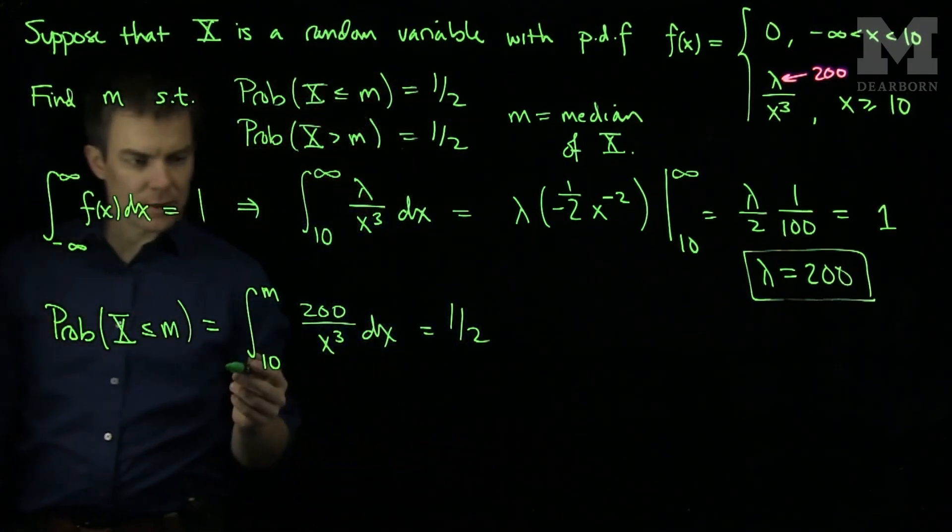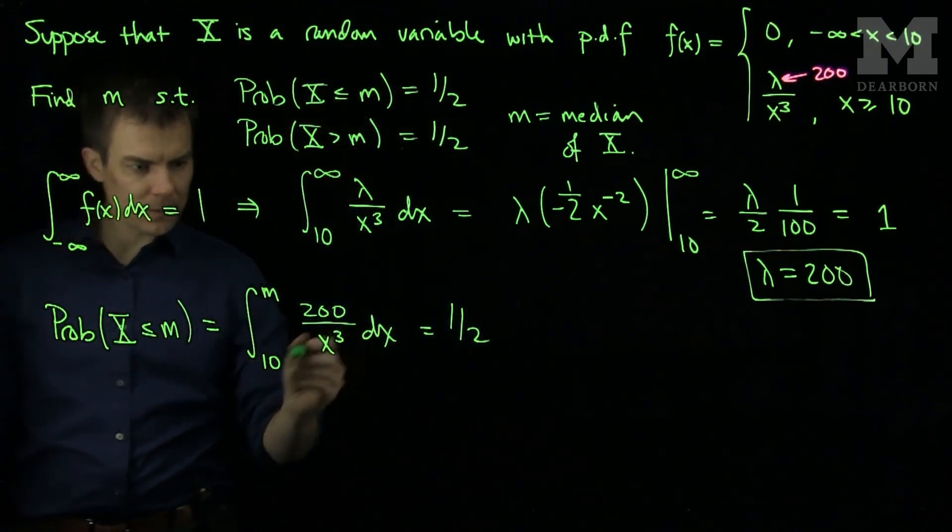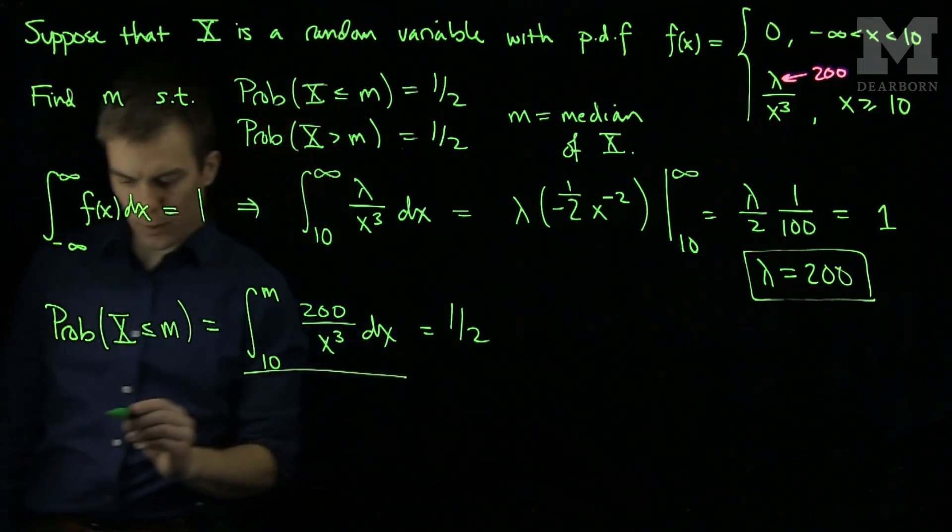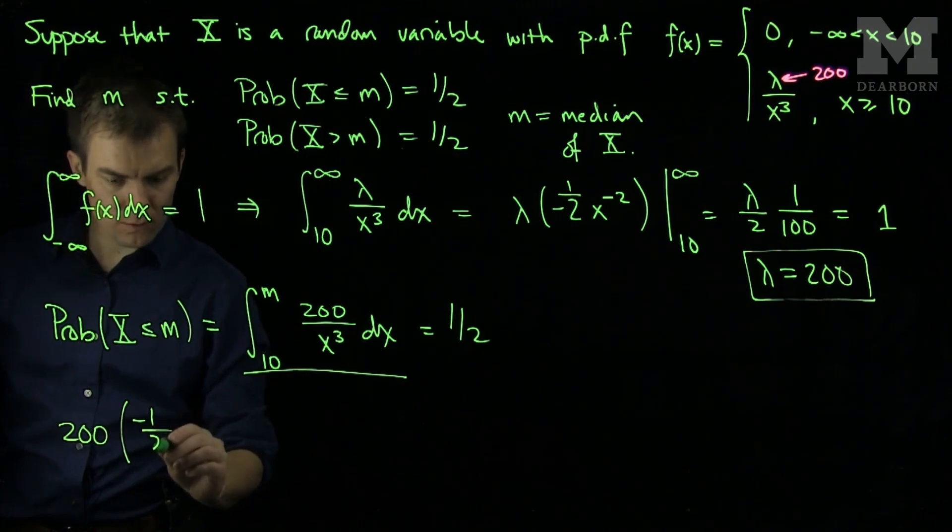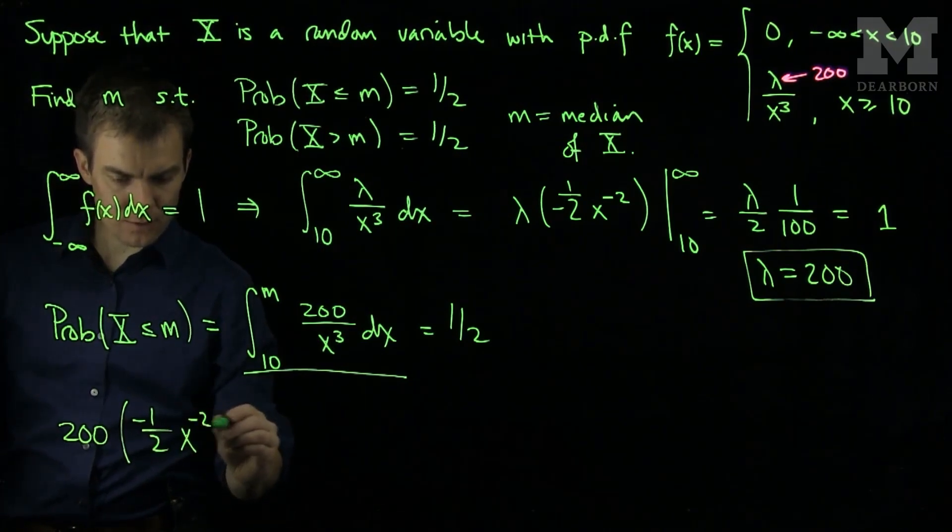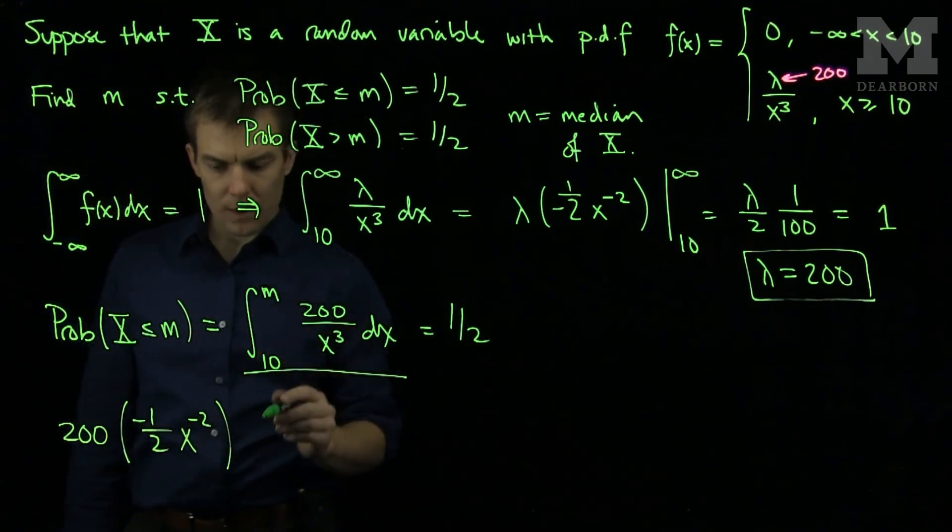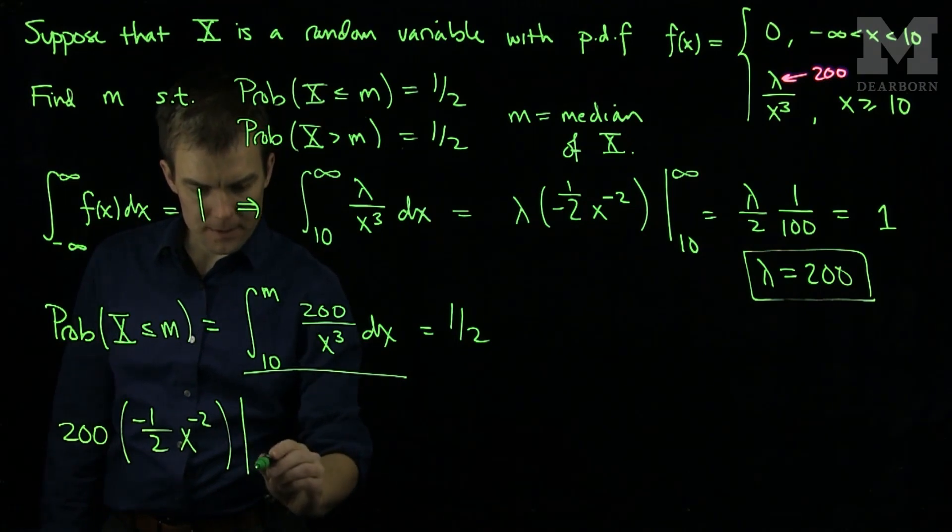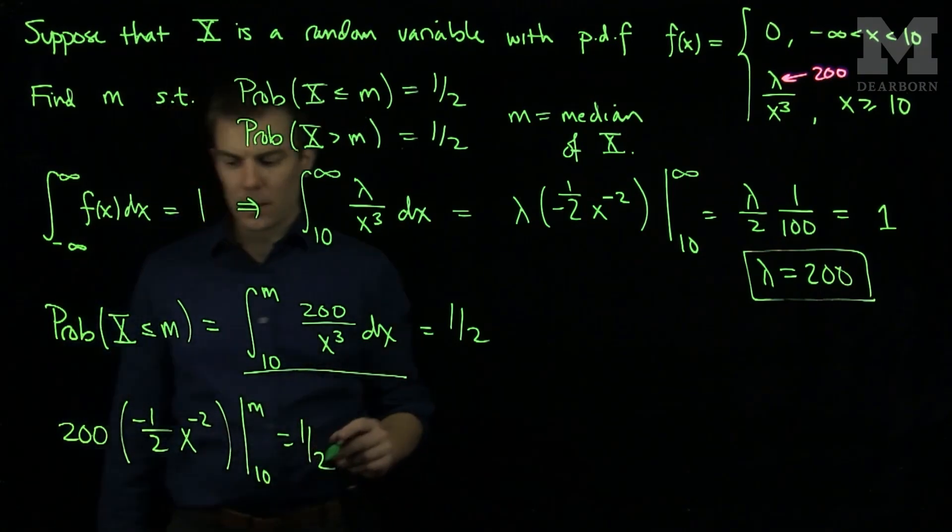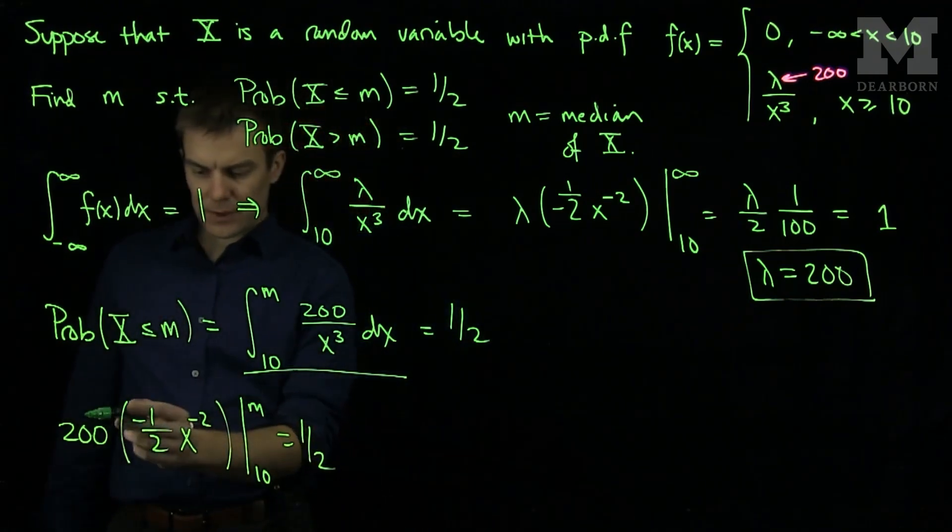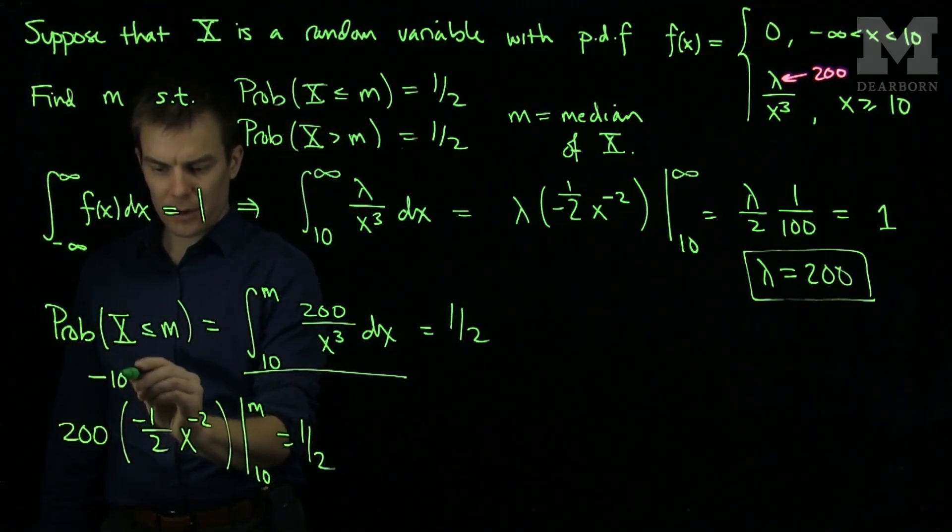And so if we do this anti-derivative, we will have 200 and then negative 1 over 2 x to the negative 2 power from 10 to m, which has to be 1 half. So this will give us negative 100, so this will simplify to just negative 100.